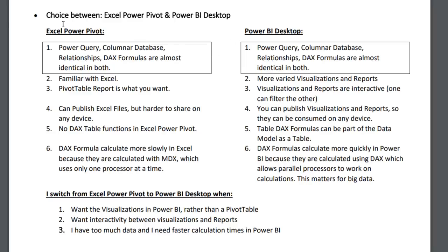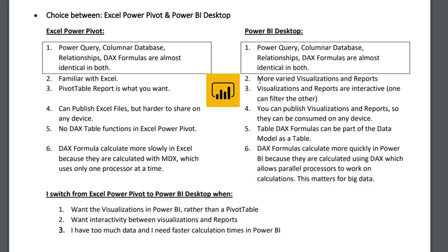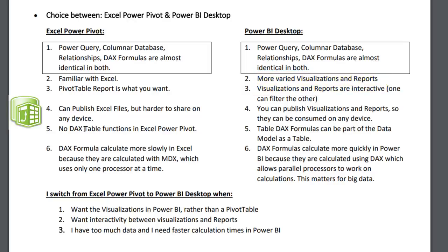How do you choose between Excel Power Pivot and Power BI Desktop? Both have Power Query, a columnar database for big data, relationships, and DAX formulas — both are almost identical. You might want to stick with Power Pivot if you're familiar with Excel and a pivot table report is what you want. You might want Power BI Desktop because it has more varied and interactive visualizations and reports. In Excel Power Pivot, you can publish Excel files, but they're harder to share on any device.